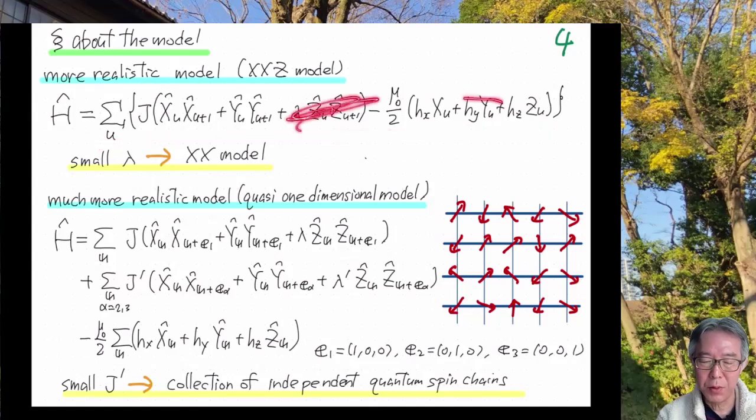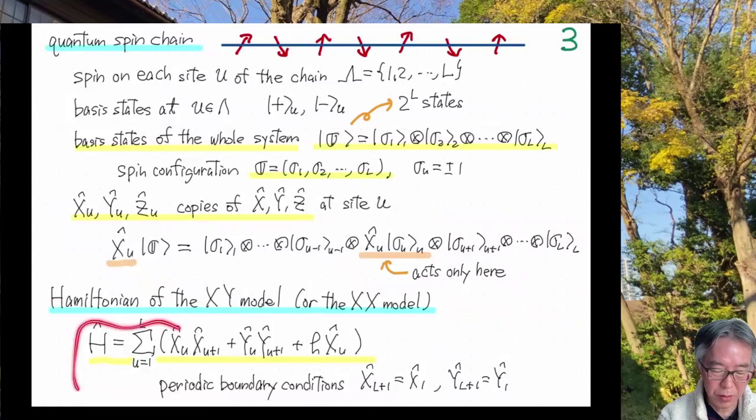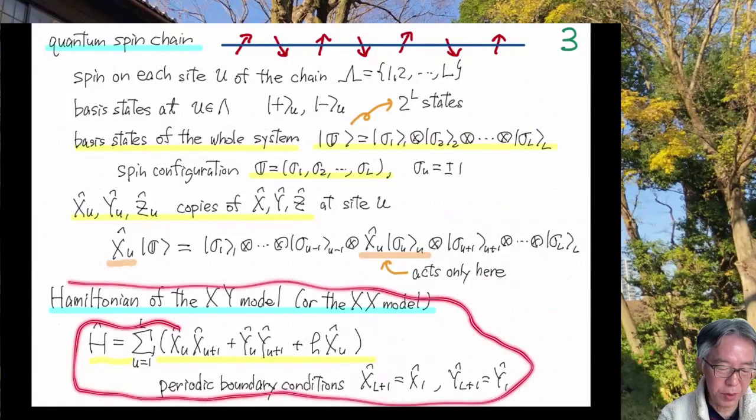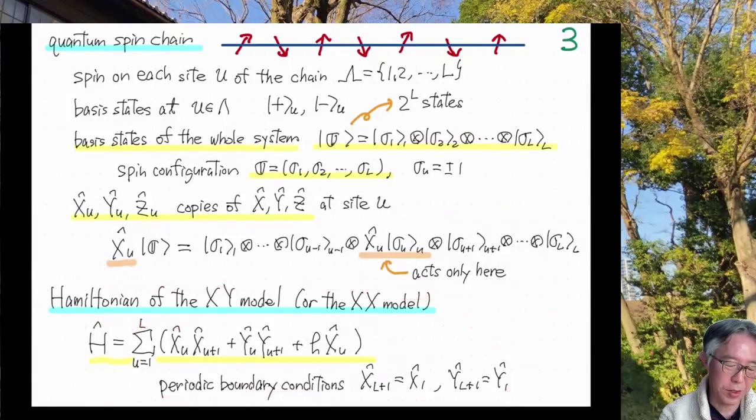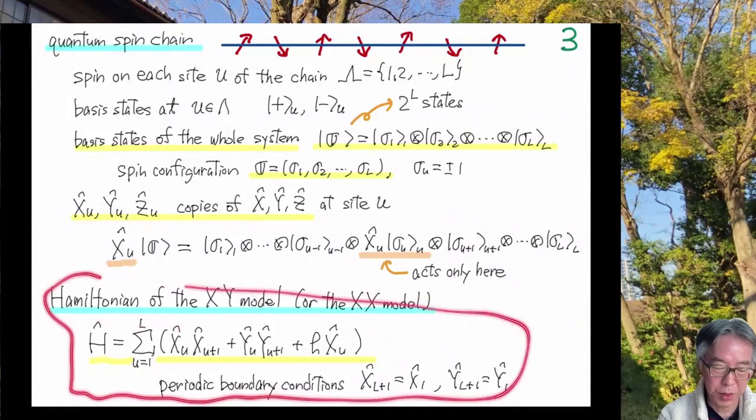So in this case, we get a collection of independent quantum spin chains. So that is the reason that we study this kind of quantum spin chain. And therefore, for special value of parameters, we get this theoretical model. Of course, if you are theoretical or mathematical enough, you can just say that we are going to study this model.